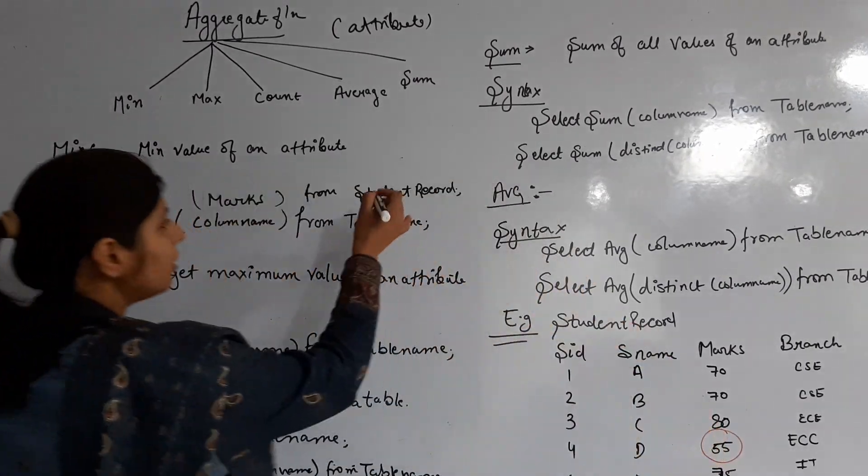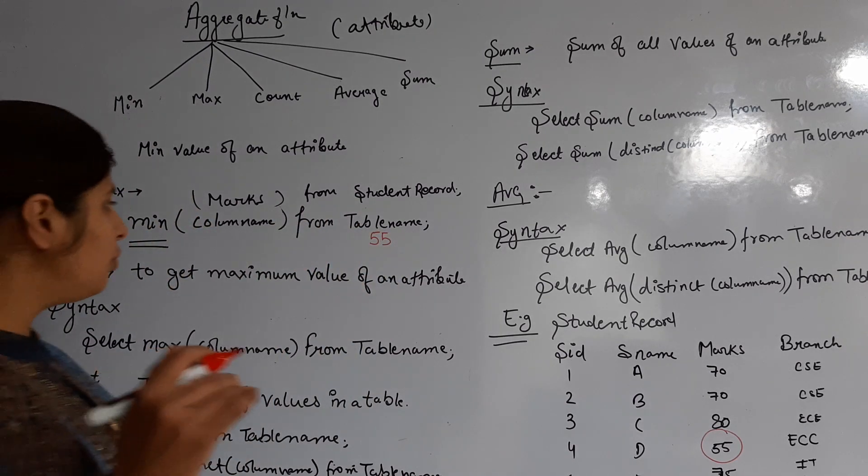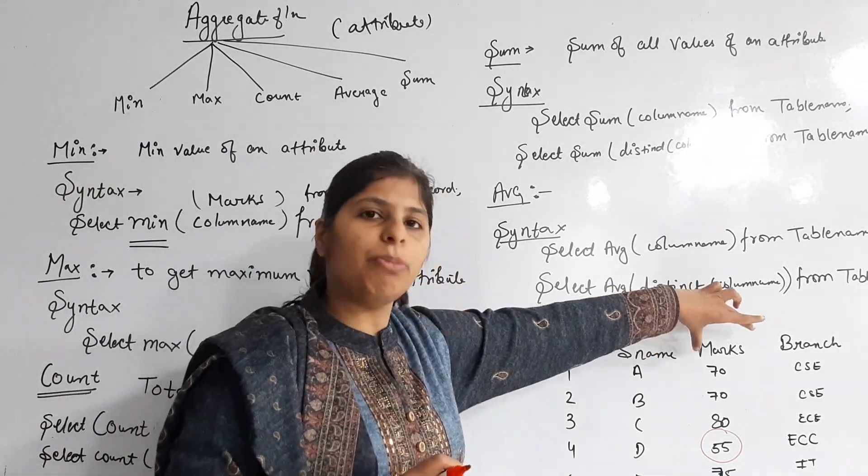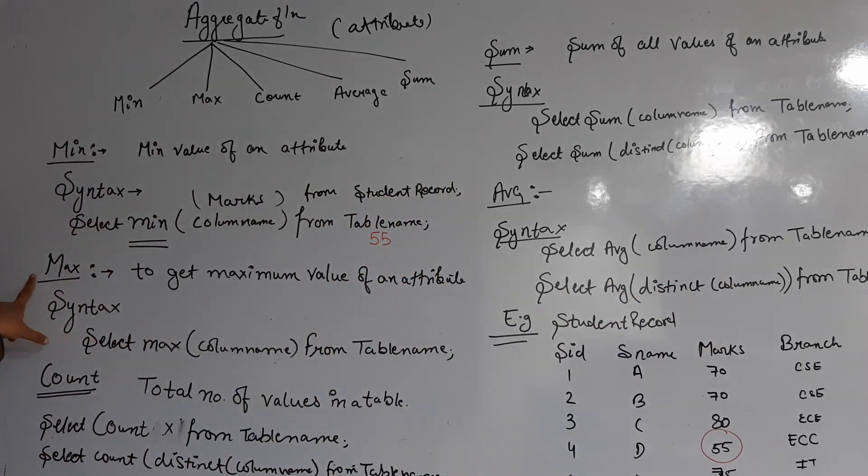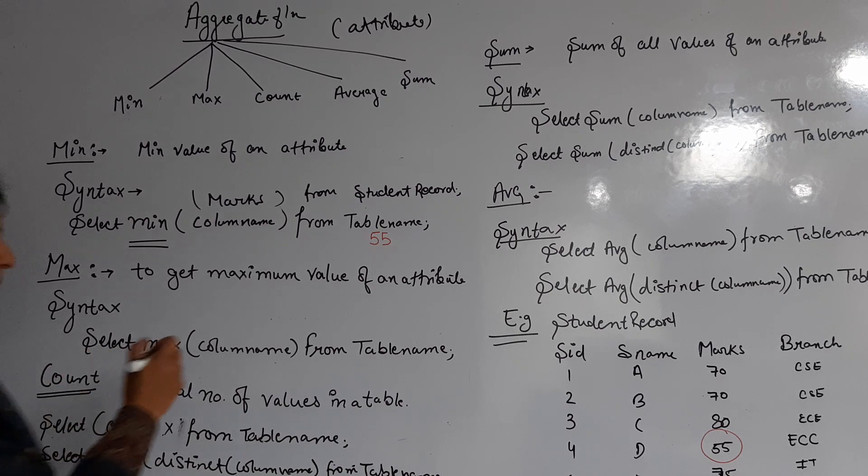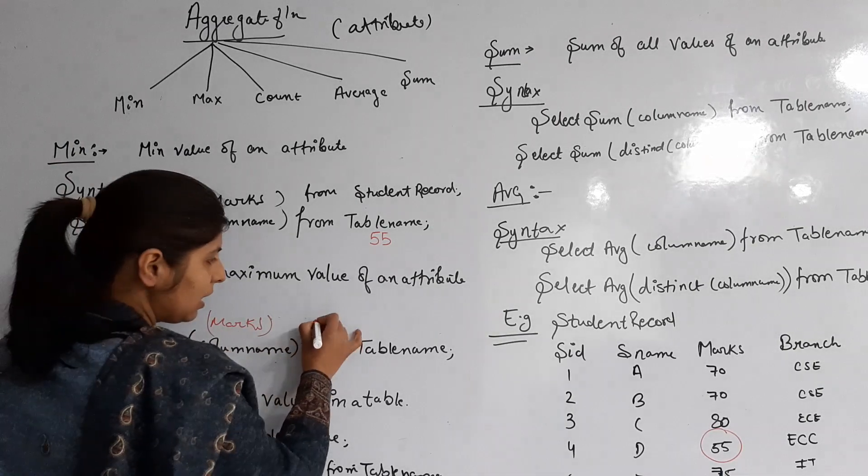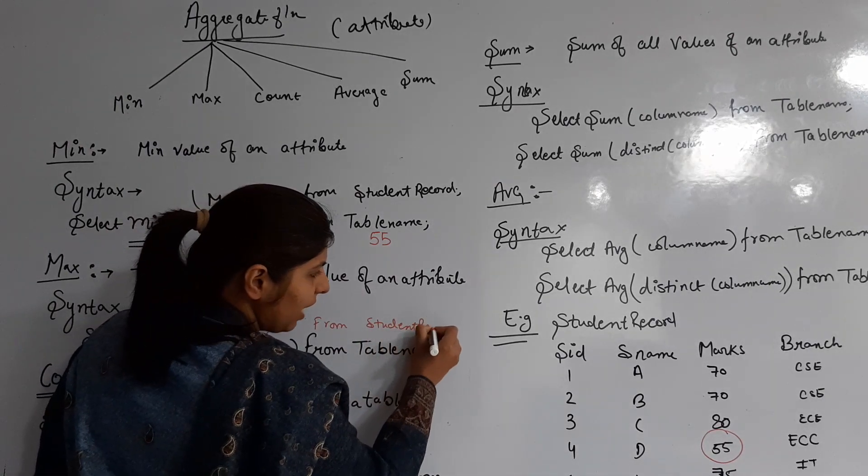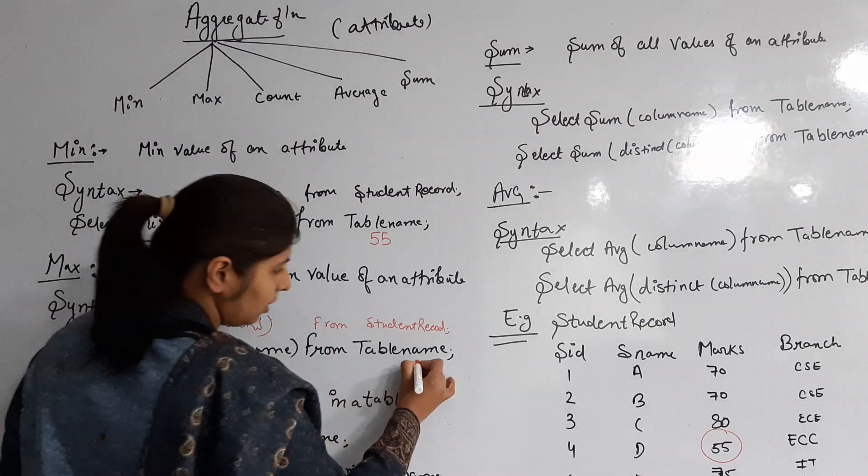Maximum means we have to find the maximum value of an attribute. Which value is maximum in a particular column - that will be fetched using the SELECT command with the MAX function. The MAX function syntax is: MAX(column_name). Column name is marks. From which table? FROM student_record.